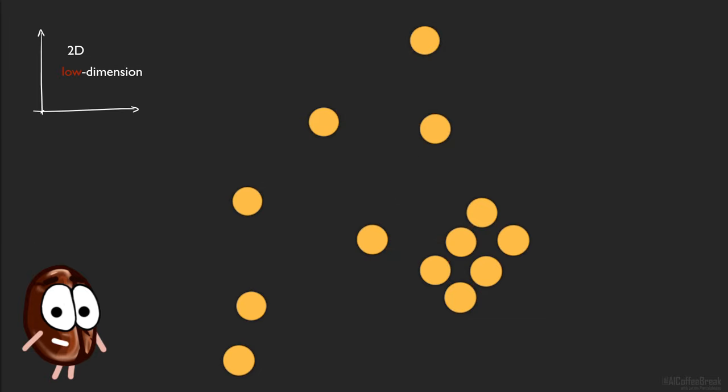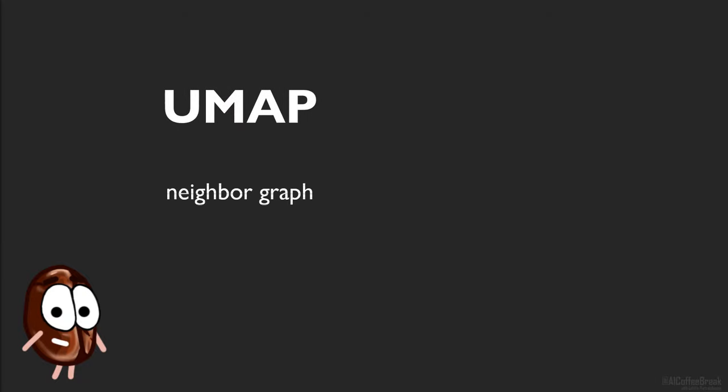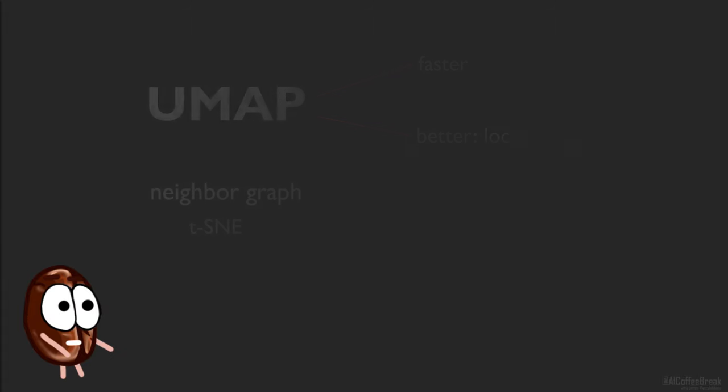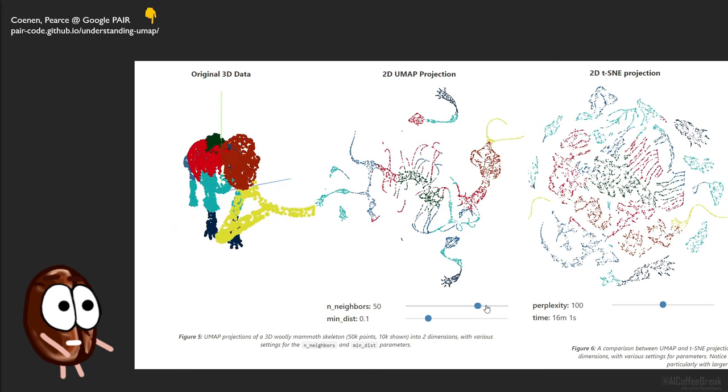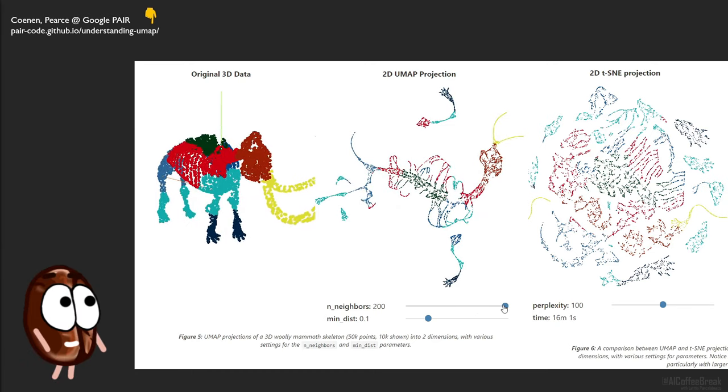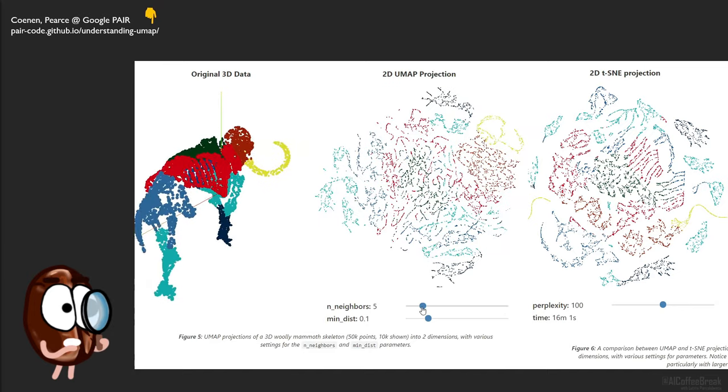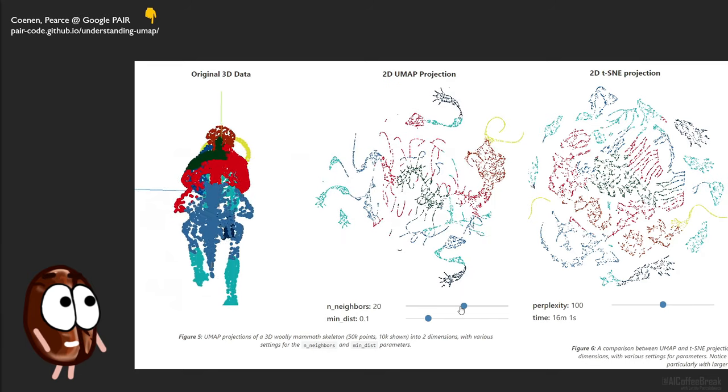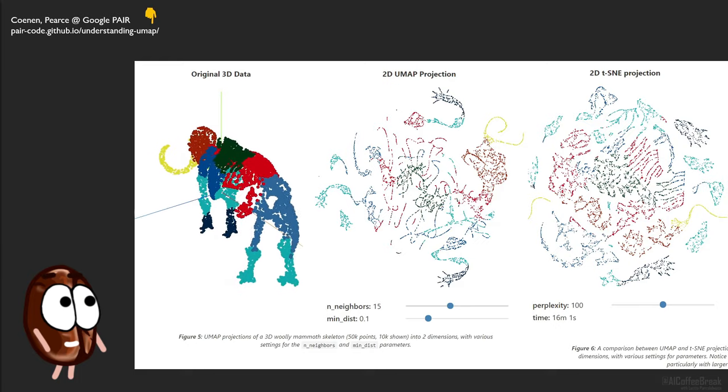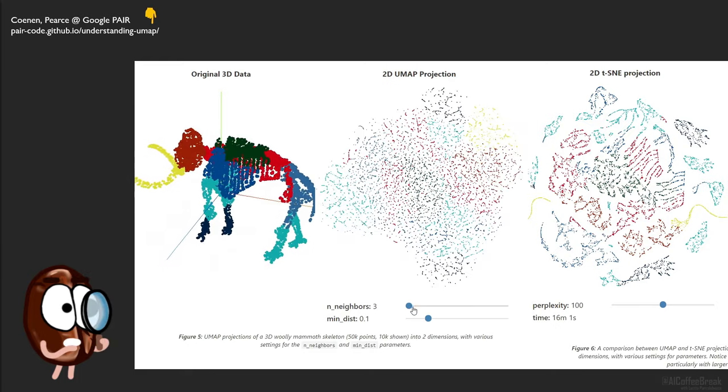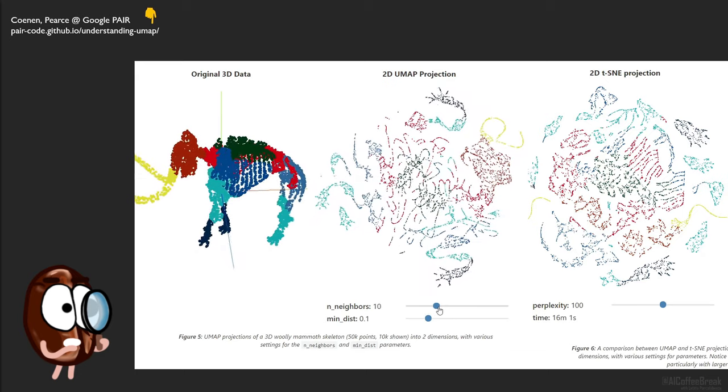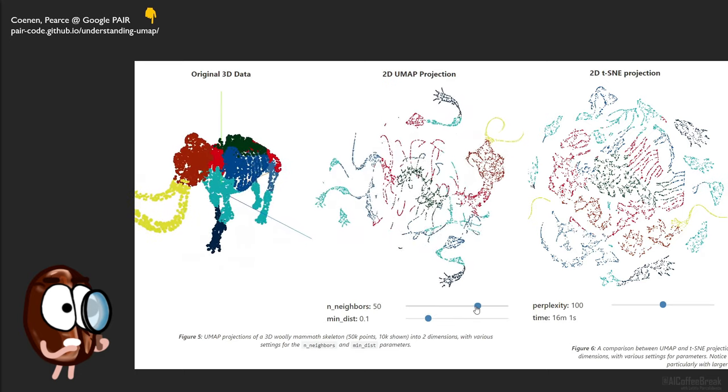So UMAP has two main strengths over the famous graph-based dimensionality reduction technique called t-SNE. It is faster due to its optimizations and strong mathematical foundations, and it also has a better balance between locality and globality in clustering. Take for example this visualization from the awesome blog from Google Pair linked below. We have this mammoth in 3D on the left, and we can see side by side how UMAP and t-SNE map this 3D mammoth into two dimensions. We can play around with the number of neighbors taken into account when constructing the high-dimensional graph, and we can clearly see how low numbers focus on the local structure, while higher numbers more on the global structure.